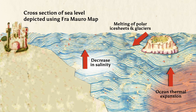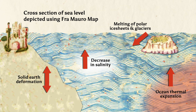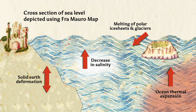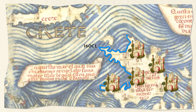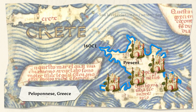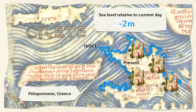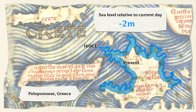Locally, there are many factors that can affect sea level changes. For example, studies found in Peloponnesus, Greece have shown sea level relative to current levels to be negative 2 meters in 160 CE, and it has progressively increased to current day levels.